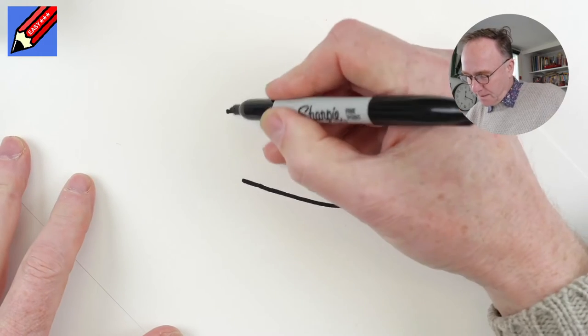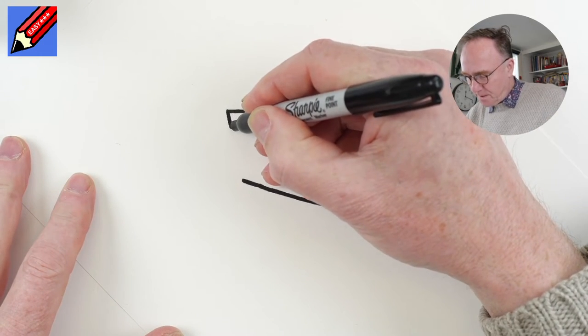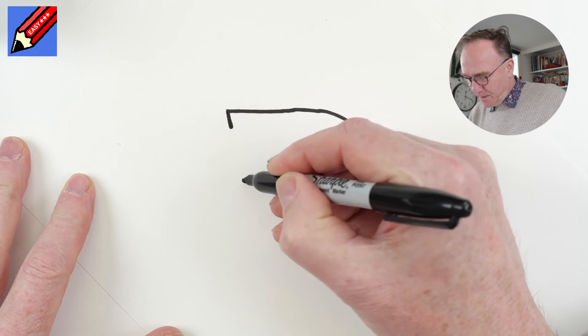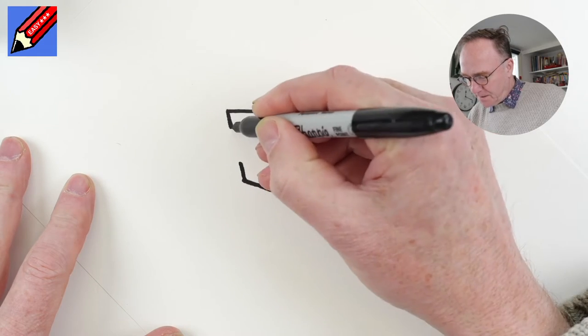Now here we want to have a line going across aiming right at that point and then another one going across there too.